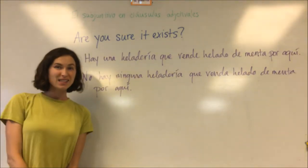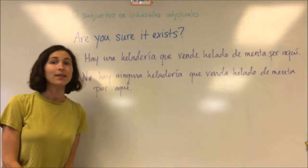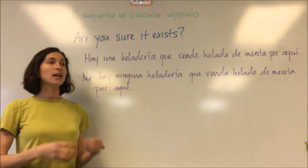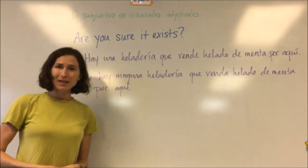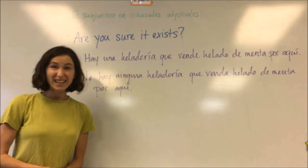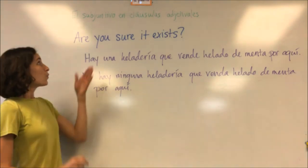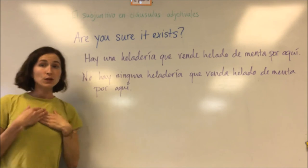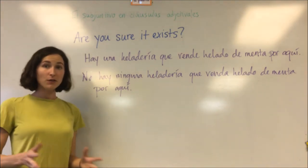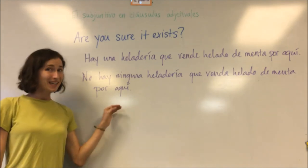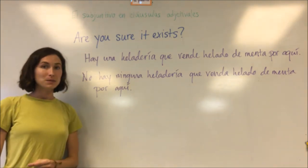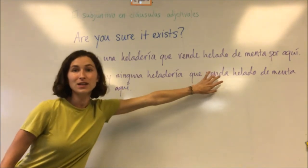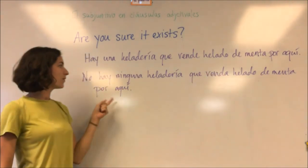This awareness of existence also applies when we are denying the existence of something. Last year we talked about negation in the subjunctive, like 'yo niego que los chicos hablen demasiado alto.' When we deny that something exists, we are not sure that it exists, so we must use the subjunctive. For example, I'm certain there is an ice cream shop that sells mint ice cream around here, but if I'm denying that place exists, I use the subjunctive: 'No hay ninguna heladería que venda helado de menta por aquí' — venda being our subjunctive conjugation of vender.